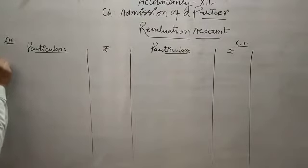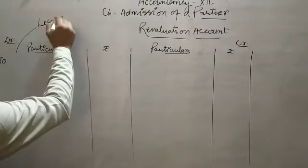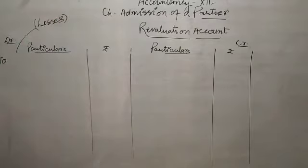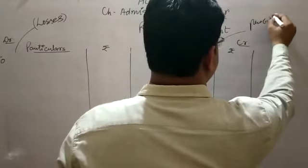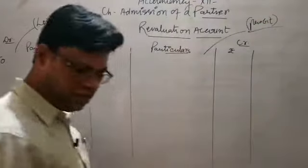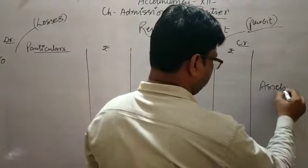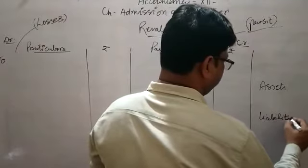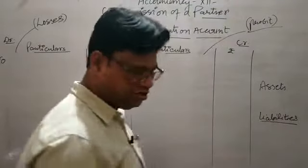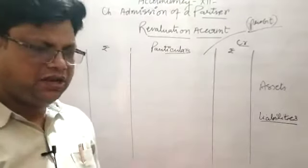What is the debit side? All losses go on the debit side. Every revaluation will record all the losses. There is profit on the credit side. Now let's look at the revaluation of assets and liabilities — this is called reassessment.